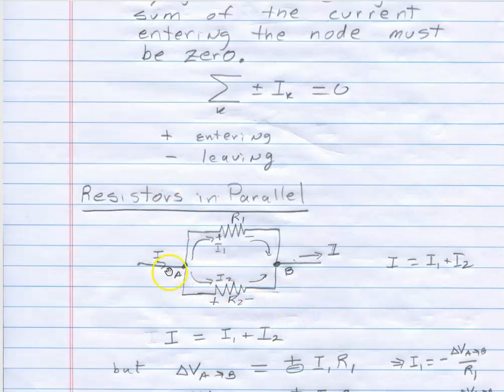And by Kirchhoff's current law, KCL, I certainly have either one of these nodes. I've got I entering. And I've got I1 and I2 leaving. So the sum here would be I minus I1 minus I2. But then when I take those over to the other side, I get the current in, I, has got to be equal to the current out, I1 plus I2.